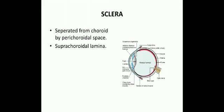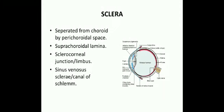In the perichoroidal space there is a delicate cellular tissue termed the suprachoroidal lamina or lamina fusca of the sclera. The sclera becomes continuous with the cornea at the sclerocorneal junction, also known as the limbus. The deep part of the limbus contains a circular canal known as the sinus venosus sclerae or canal of Schlemm. Aqueous humor drains into the anterior scleral or ciliary veins through this sinus.